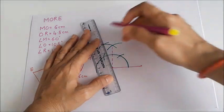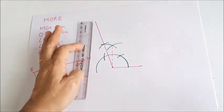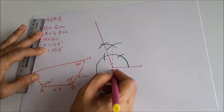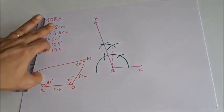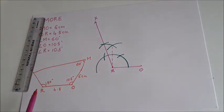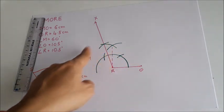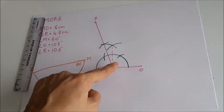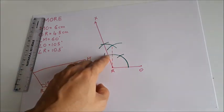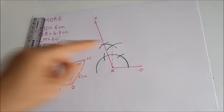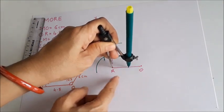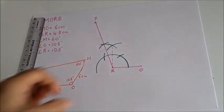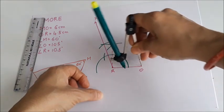I draw the ray to get my angle. This is O, and this ray I mark as X. So at R we have drawn 105 degrees. Now at O also we need to draw 105 degrees. Instead of doing the whole process again, I will take the same measurement and draw the angle at O — 105 degrees. I take the same radius that is already there and draw from center R.